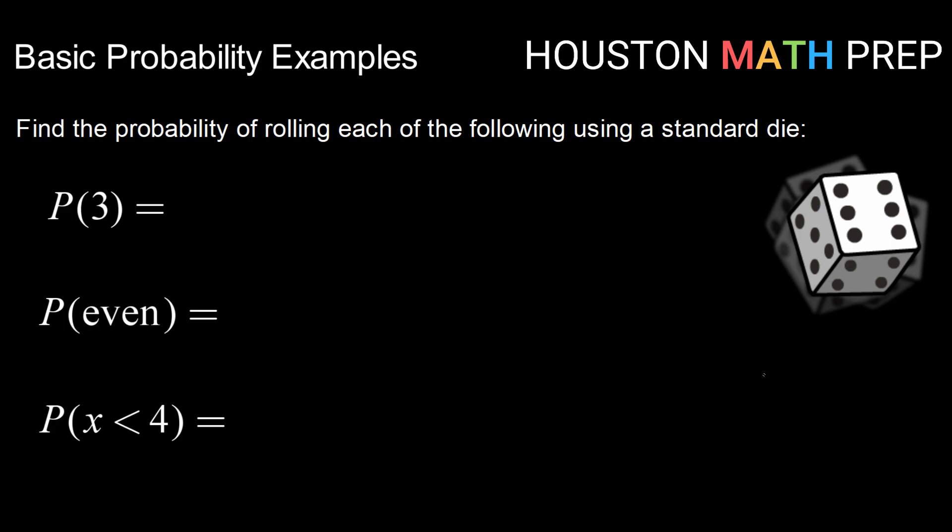So we want to find the probability of certain events happening when we roll this six-sided die. Keeping in mind that when we roll a fair die, each outcome is equally likely. So if we look at our sample space for rolling a die,